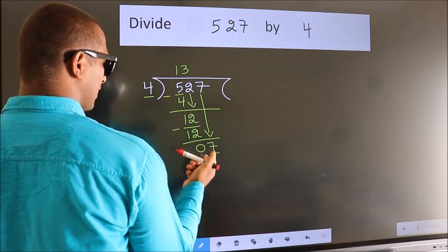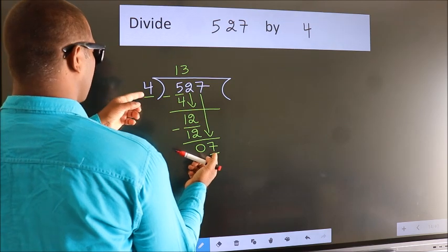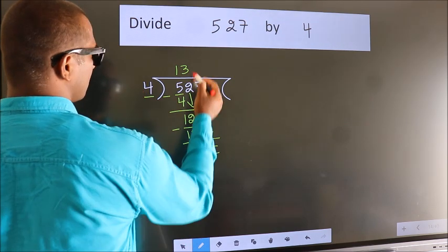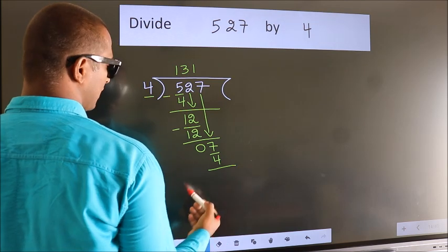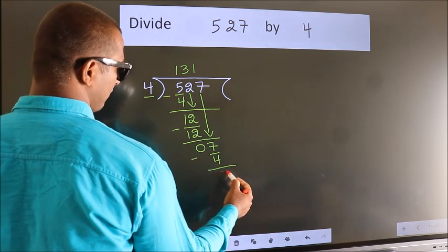So, 7. A number close to 7 in 4 table is 4 once 4. Now, we subtract. We get 3.